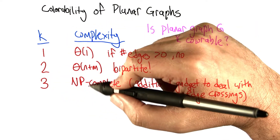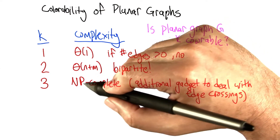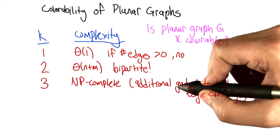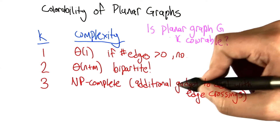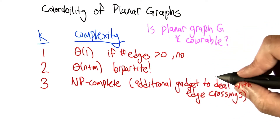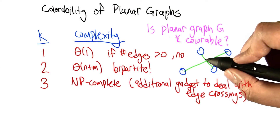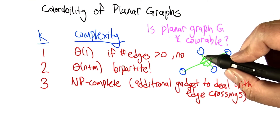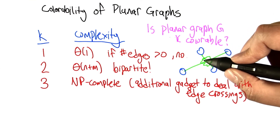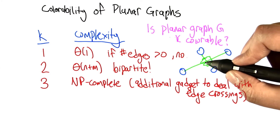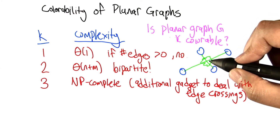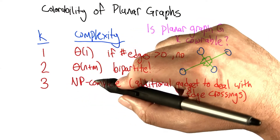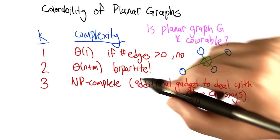If K is 3, 3-colorability we showed was NP-complete — but we did that for general graphs, not planar graphs. It turns out you can introduce another gadget that lets you deal with edge crossings. If you have a piece of the graph with a crossing, you can introduce some nodes so that information travels along without ever crossing another edge, making it a planar graph. So 3-coloring a planar graph isn't any easier than 3-coloring a general graph — it's NP-complete.